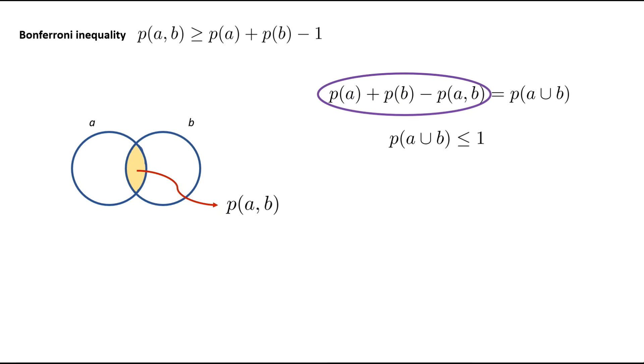Now looking back at the first equation, we know that the first left-hand side is equal to probability of A or B. So we can also say that this left-hand side is also less than or equal to 1.